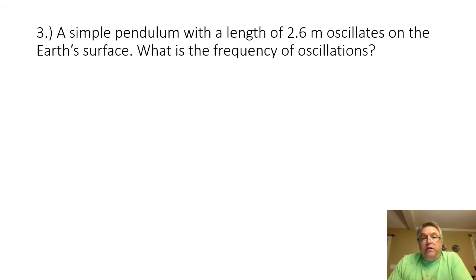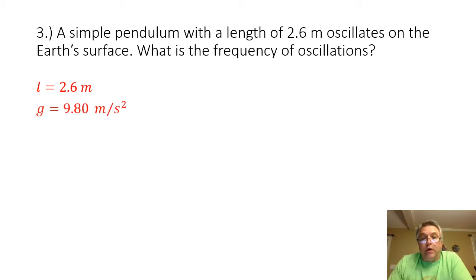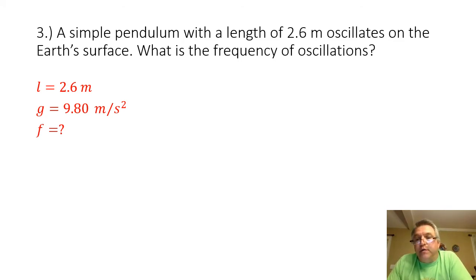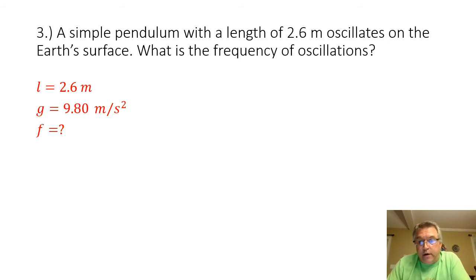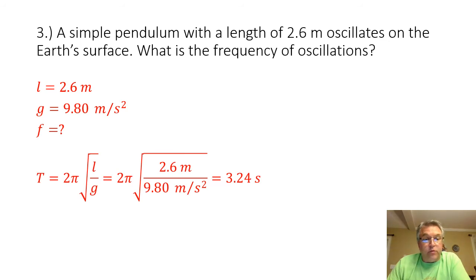Problem three: a simple pendulum with a length of 2.6 meters oscillates on the Earth's surface. What is the frequency of oscillations? We are given a length of 2.6 meters, and gravitational acceleration is 9.80 meters per second squared. We can't get frequency directly from the pendulum equation, but we can get the period, and period and frequency are reciprocals of one another. Finding the period first: T equals 2π times the square root of L over g, plugging in the values gives a period of 3.24 seconds.